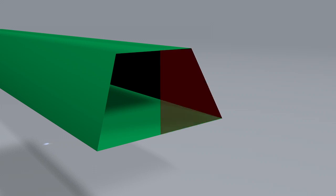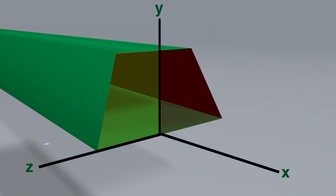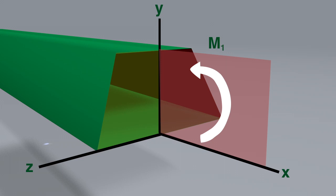The assumptions in pure bending are, number one, the beam is symmetric about the XY plane. Number two, all loads act in the XY plane.